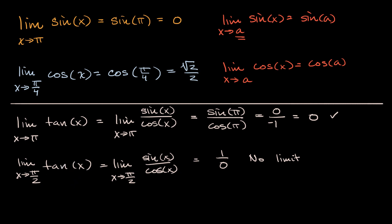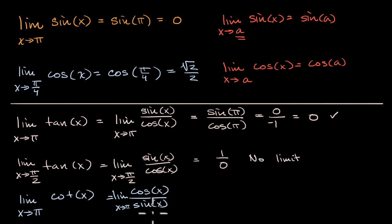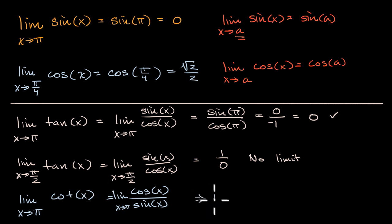Let's find the limit as x approaches pi of cotangent of x. Cotangent of x is one over tangent of x, or cosine of x over sine of x. If we substitute pi in, we get negative one over zero, so pi is not in the domain of cotangent of x. If you were to plot it, you would see a vertical asymptote right there. So we have no limit.